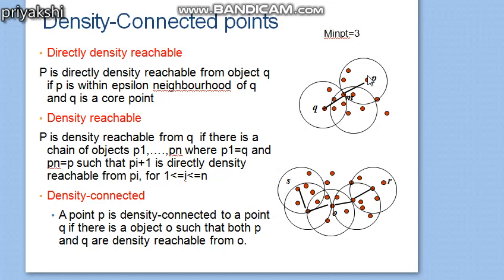Next is the density connected concept. A point p is density connected to a point q if there is an object o such that both p and q are density reachable from o. In the diagram, r is density reachable from o and s is also density reachable from o, so we can say that r and s are density connected.